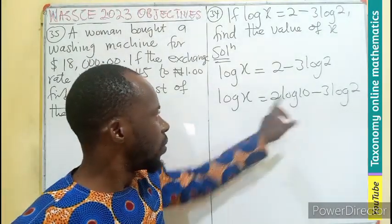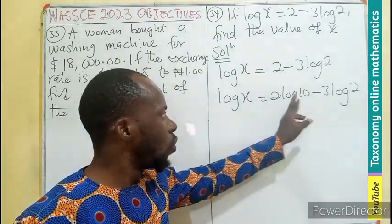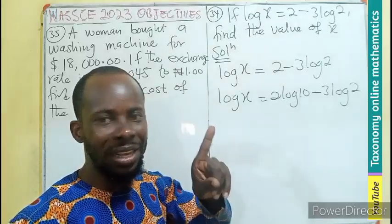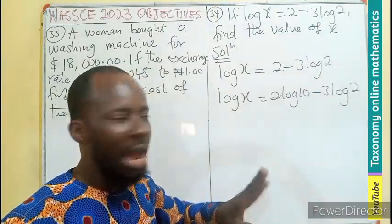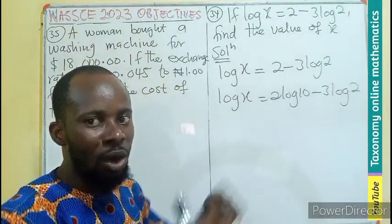So I can write this as log x = log 10 times 2 - 3 log 2. They are all in base 10. So log 10 base 10 will give us 1. 1 times 2 will still be 2. So I have not changed the value. I only bring in the property of logarithm.